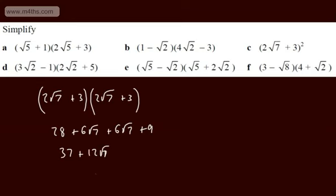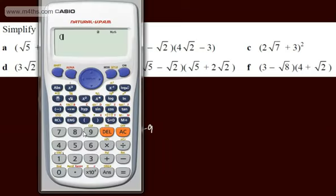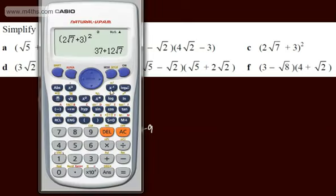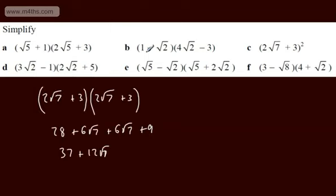Again, putting it through a calculator — if we input 2 root 7 plus 3 and square it, it gives us exactly 37 plus 12 root 7. So as you can see, the calculator keeps it in this exact value. Whatever you do, don't go to the decimals — leave it in what we call exact form.